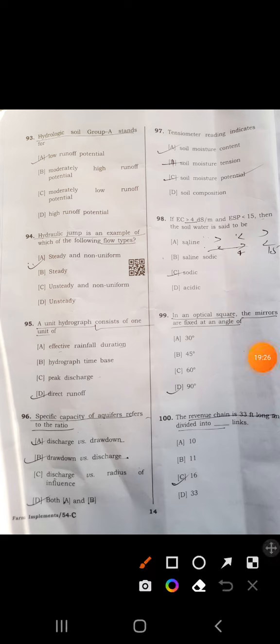Ninety-third: hydrologic soil group A stands for low runoff potential. A is correct. Ninety-fourth: hydraulic jump is an example of steady non-uniform flow.